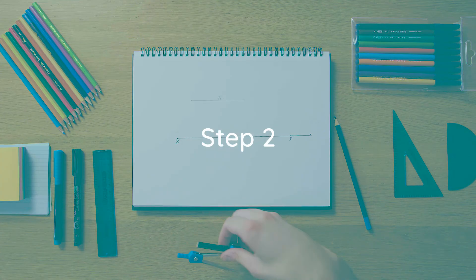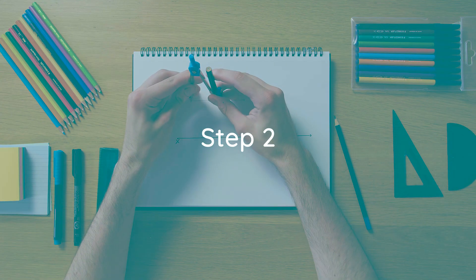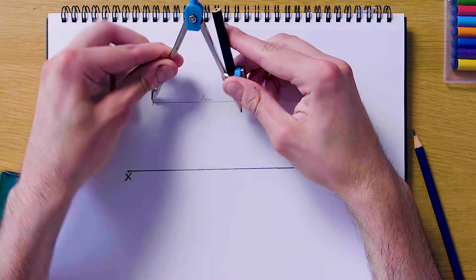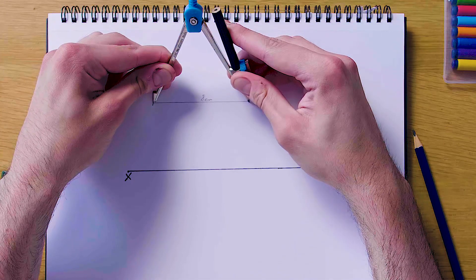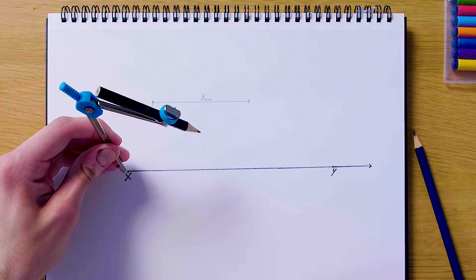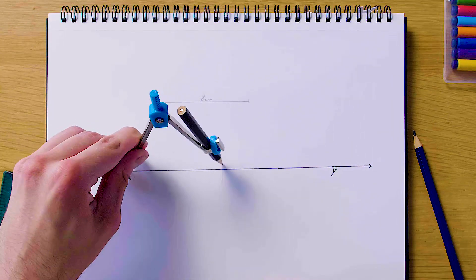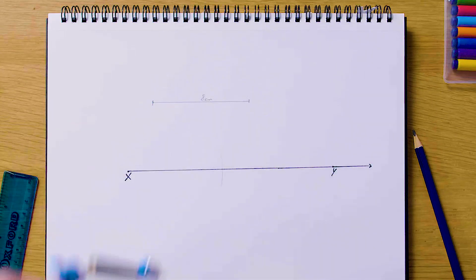So the next step of this question is going to be to grab our compass and set our compass to be 8 centimeters in length. As you can see we're just going to be matching it to the length of this line, and then we're just going to use it from the point x and swing out somewhere on the ray xy.